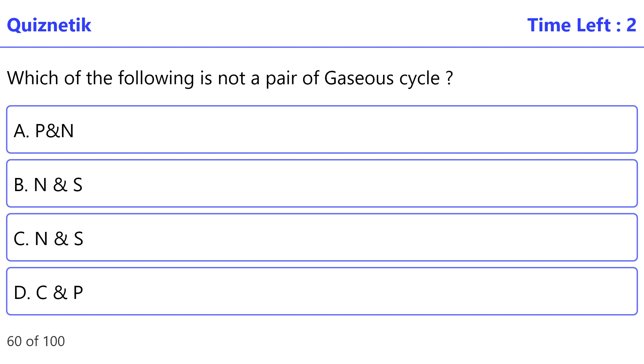Which of the following is not a pair of gaseous cycle? The correct option is C, N and S.